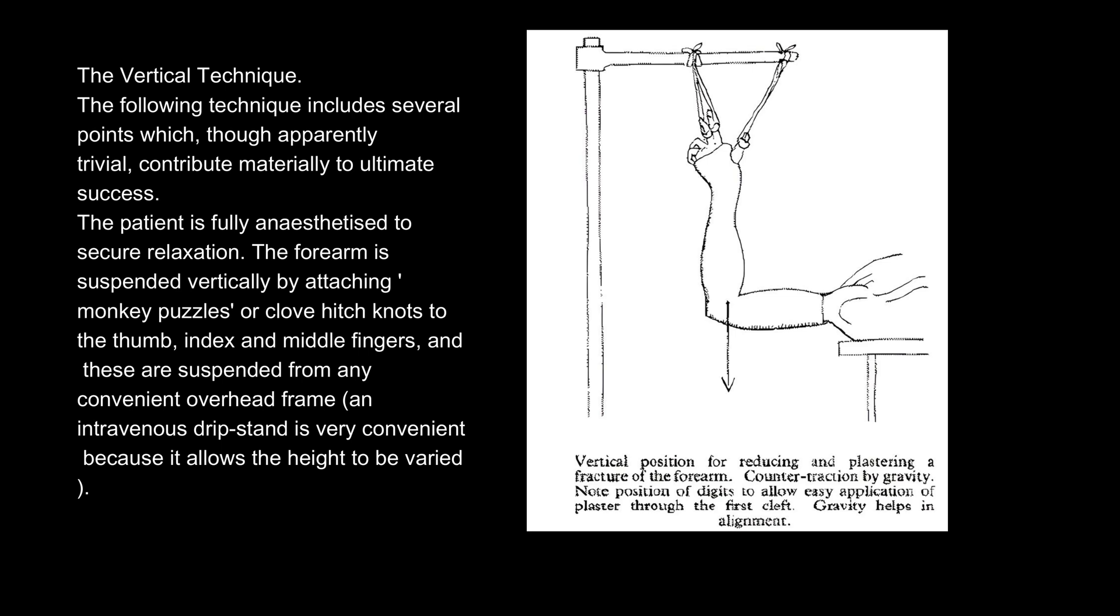The forearm is suspended vertically by attaching monkey puzzles or clove hitch knots to the thumb, index and middle fingers, and these are suspended from any convenient overhead frame. An intravenous drip stand is very convenient because it allows the height to be varied.